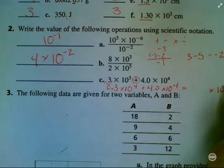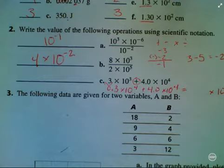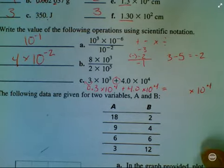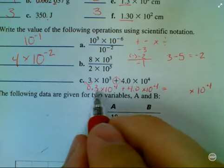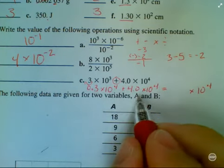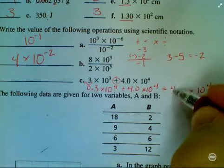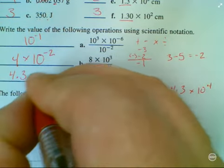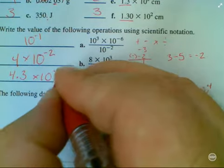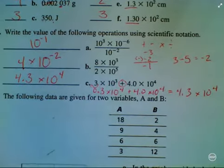And what I get to do now is just keep that times 10 to the 4th as it is. I don't have to change it at all. All I have to do now is add my 0.3 and my 4.0. So my final answer is 4.3 times 10 to the 4th power.